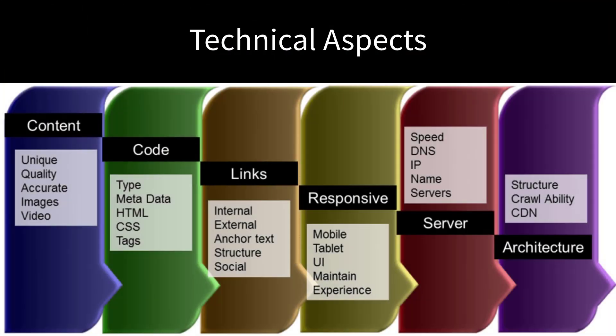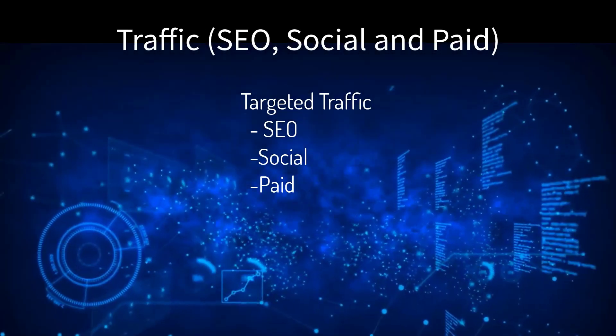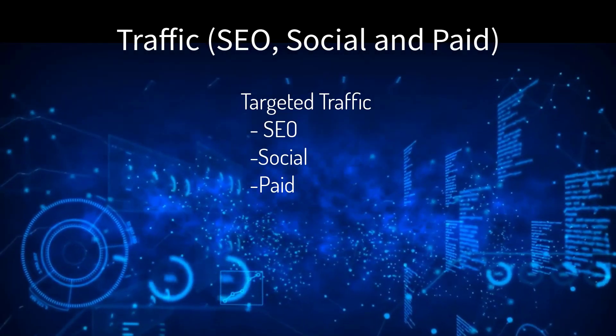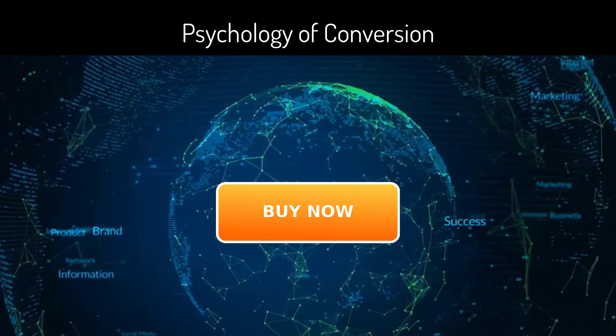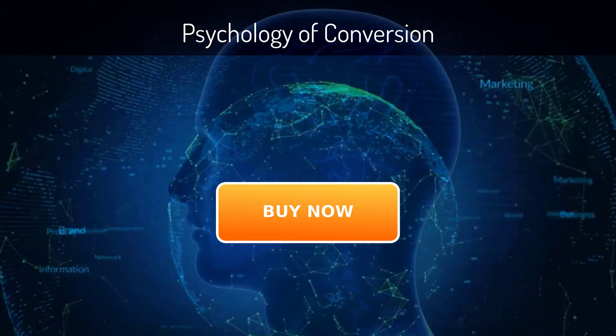Of course, all online marketing must have three elements in alignment: the technical aspects — servers, layout, code structure — the traffic — SEO, social, and paid — and the psychology of conversions.